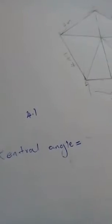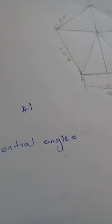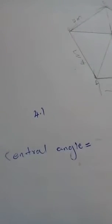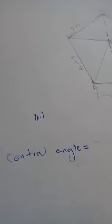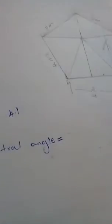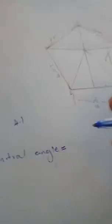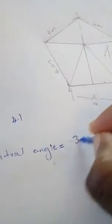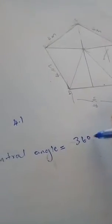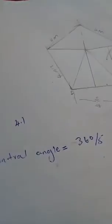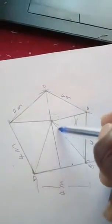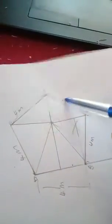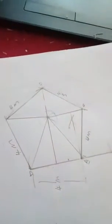The question says we need to calculate the area of the regular pentagon. The central angle equals 360 divided by 5 — that is 360 divided by five sides: one, two, three, four, five.